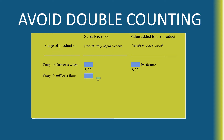First, the farmer sells wheat for about 30 cents to the miller. When the miller buys this wheat for 30 cents, they turn it into flour. Now the miller can sell that flour for 65 cents.